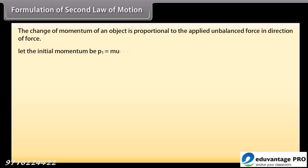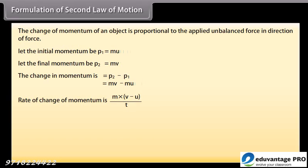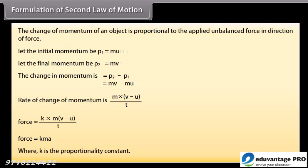Let the initial momentum be P1 which is equal to M U. Let the final momentum be P2 which equals M V. The change in momentum is P2 minus P1, which equals M V minus M U. Rate of change of momentum is M into V minus U whole upon T. Force is equal to K into M into V minus U whole upon T. Force is equal to KMA, where K is the proportionality constant.